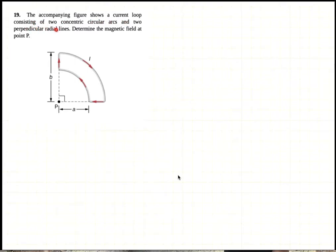The figure shows the current loop consisting of two concentric circular arcs and two perpendicular radial lines. Determine the magnetic field at point P.